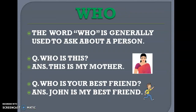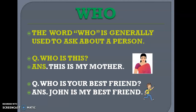Let's begin with 'who.' The word 'who' is generally used to ask about a person. For instance, if the question is 'Who is this?' the answer would probably be 'This is my mother.' Or, 'Who is your best friend?' You could say 'John is my best friend.'